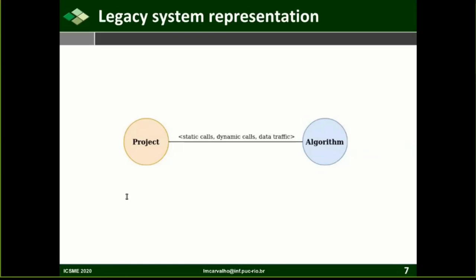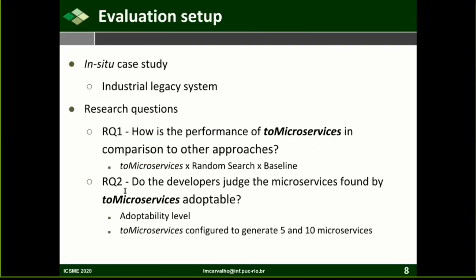This data is used to group a single feature per microservice. To evaluate µTosca, we performed an in-situ case study with an industrial legacy system using virtual migration to microservices. We generate a representation of the legacy system and compare µTosca with a baseline approach using two criteria and a random search, as shown in research question one. In a qualitative way to address research question two, eight experienced developers of the industrial legacy system answered about the adoptability of microservices generated by µTosca.